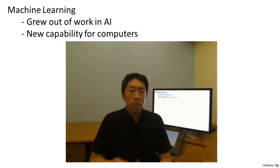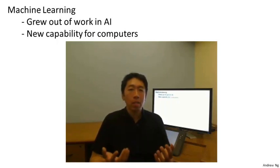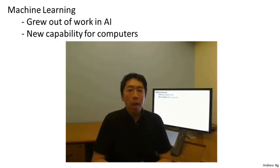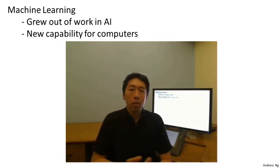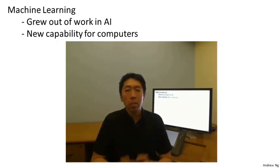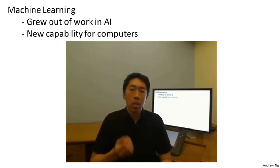For me, I work on machine learning, and in a typical week I might end up talking to helicopter pilots, biologists, computer systems people, and some of my colleagues here at Stanford. Averaging two or three times a week, I'll get email from people in Silicon Valley who have an interest in applying learning algorithms to their own problems. This is a sign of the range of problems that machine learning touches — there's autonomous robotics, computational biology, and tons of things in Silicon Valley that machine learning is having an impact on.